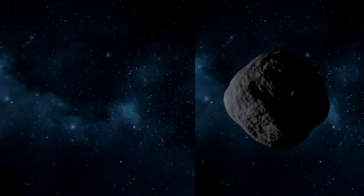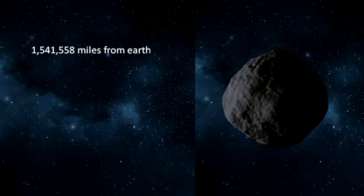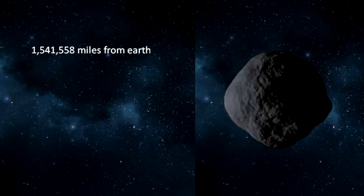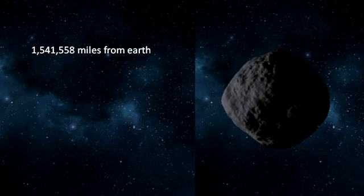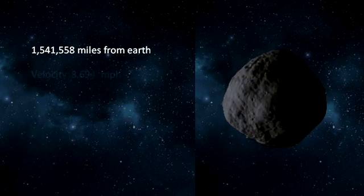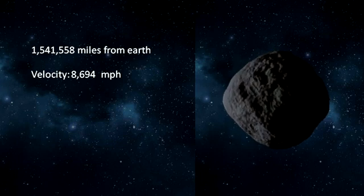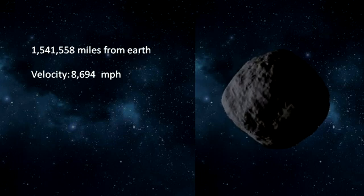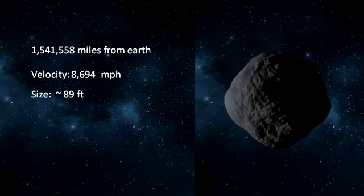Now the asteroid 2022 CF3 is at a distance of 1,541,558 miles from Earth, and it is decreasing with a velocity of 8,694 miles per hour. The size of this asteroid is nearly 89 feet, which is wider than an Olympic swimming pool.